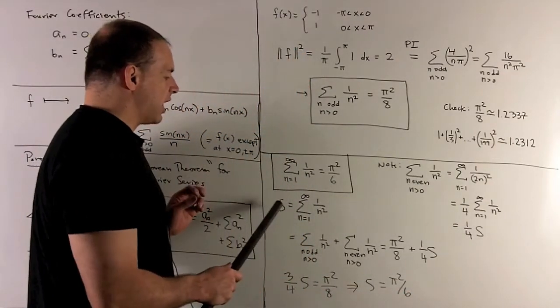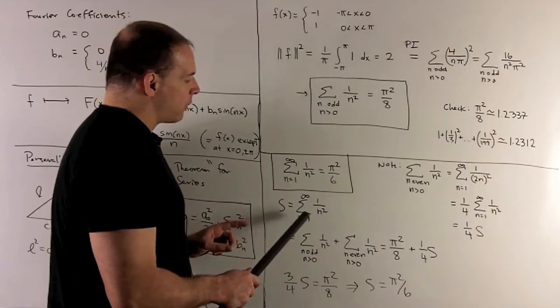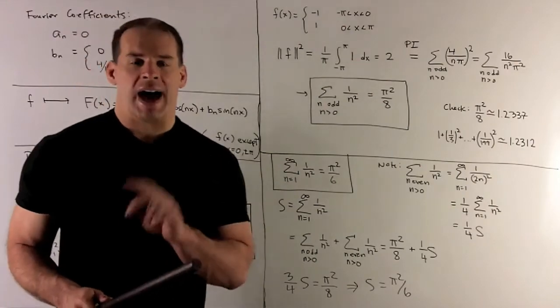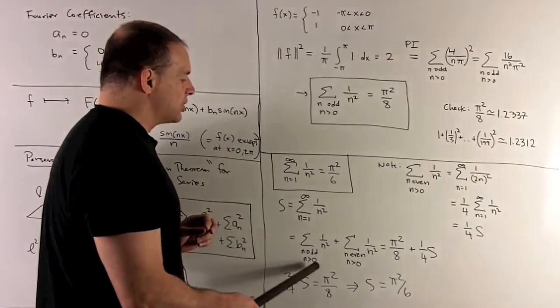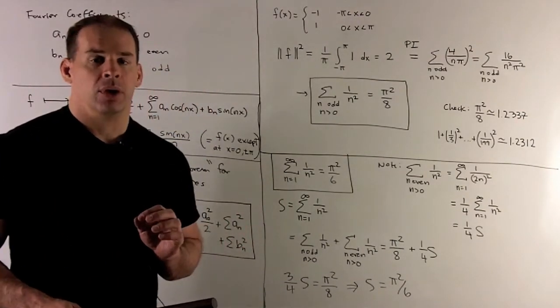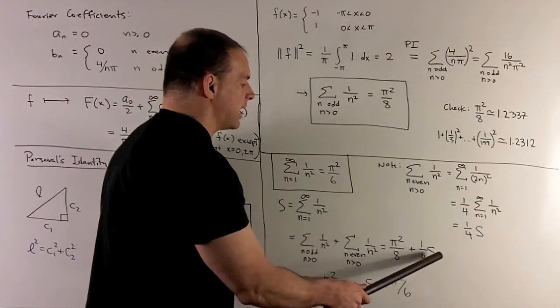Now, let's take a look at s itself. That's going to be sum over all positive integers. We can break that up into the odds and the evens. If I take the term with just the odds, that's going to be pi squared over 8 by what we just worked out. For the evens, we just saw that's going to be 1 fourth times s.